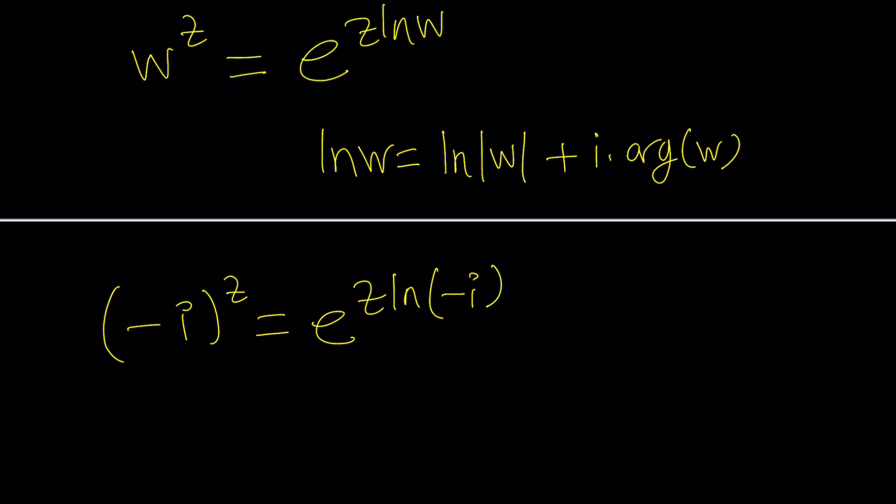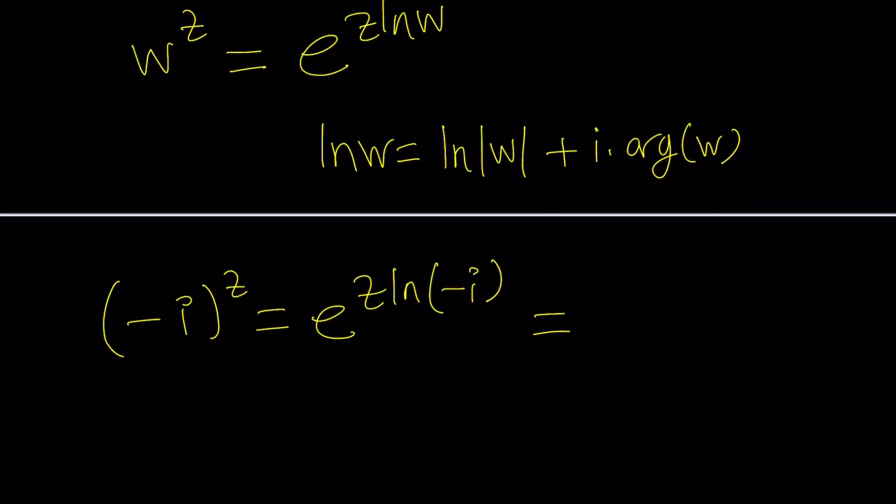So you can plug it in together and you'll get a formula or you can just directly do it. So negative i to the power z can be then written as e to the power z times ln negative i. So this equals i on the right hand side.